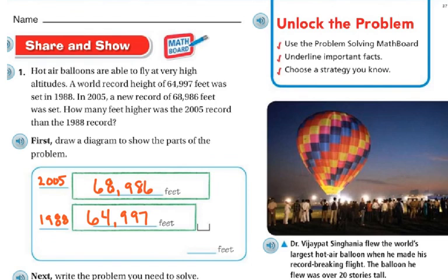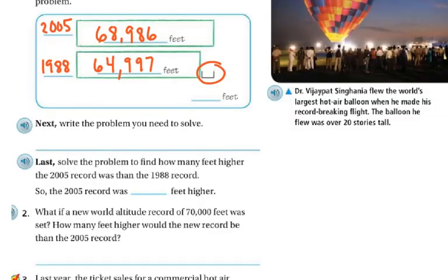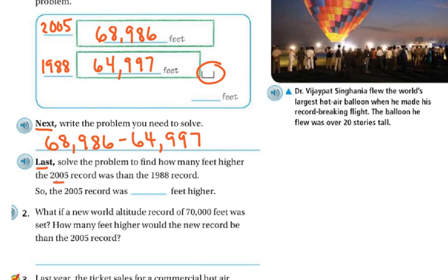Using the bar model, we can see I'm trying to find the difference between the two — this little space right here. So if I subtract the two, I write the problem I need to solve: 68,986 minus 64,997. Then I'm going to solve the problem to find out how many feet higher the 2005 record was than the 1988 record.